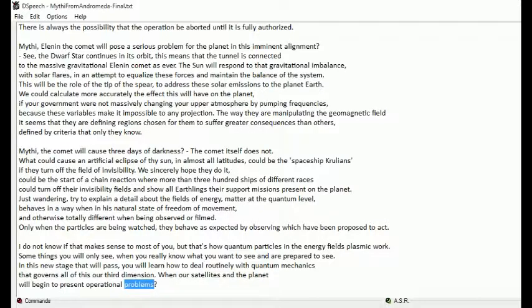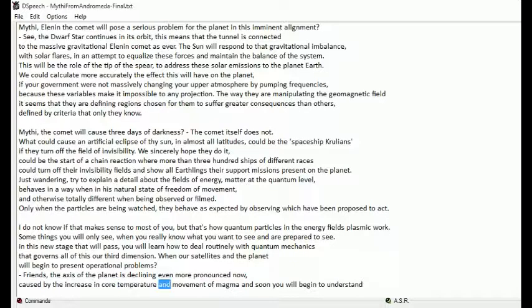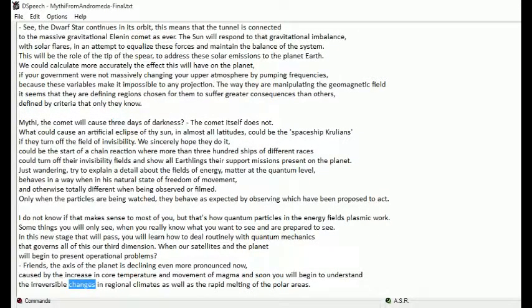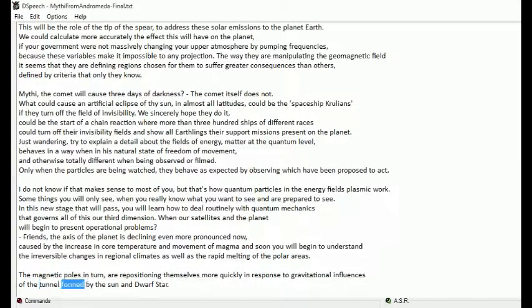Friends, the axis of the planet is declining even more pronounced now, caused by the increase in core temperature and movement of magma. And soon you will begin to understand the irreversible changes in regional climates as well as the rapid melting of the polar areas. The magnetic poles in turn are repositioning themselves more quickly in response to gravitational influences of the tunnel formed by the sun and dwarf star.